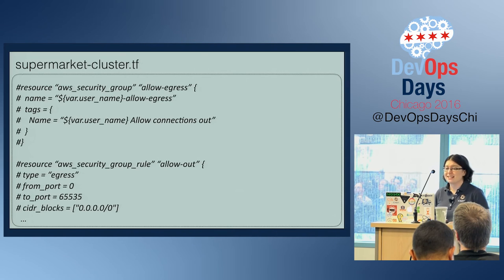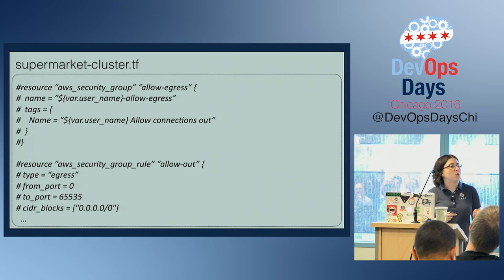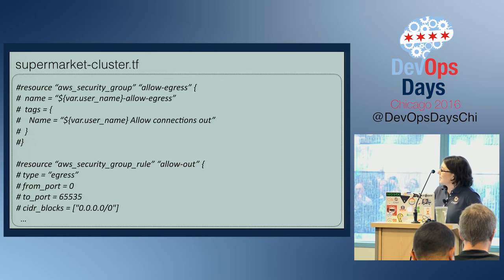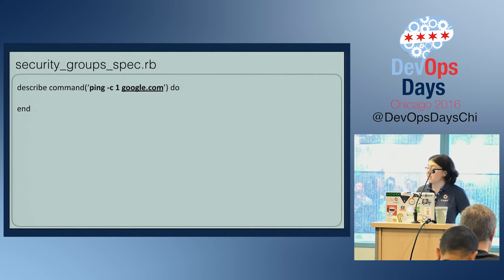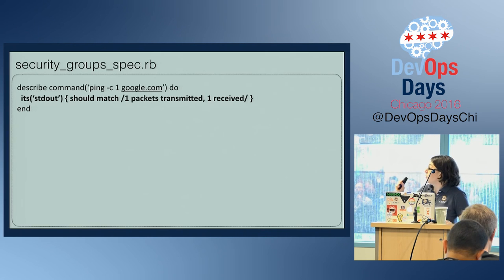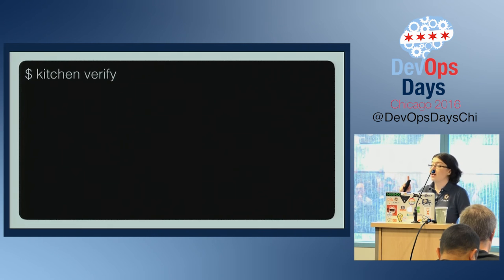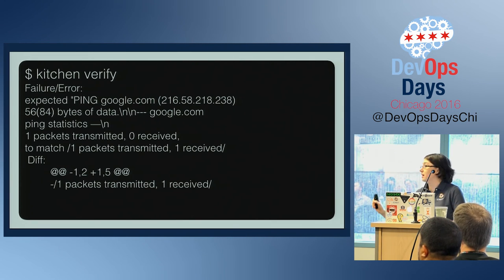It's good to start writing tests just for the portion of code you want to change. Our hypothetical requires condensing from two security groups to one. The test I'll write using InSpec: when it runs the command 'ping google.com' on one of my instances, it should receive the output 'one packet transmitted, one received' — meaning my instance can send traffic out to the public internet. The first time I run it with kitchen verify, I get a failure: 'one packet transmitted, zero received.' This means our instance cannot currently send traffic to the public internet. It's good to have a failure first.